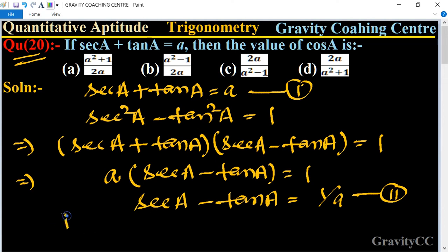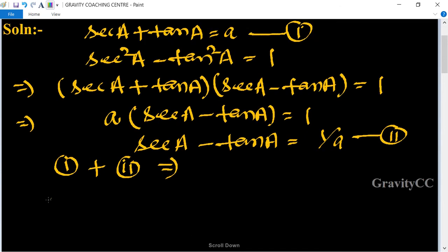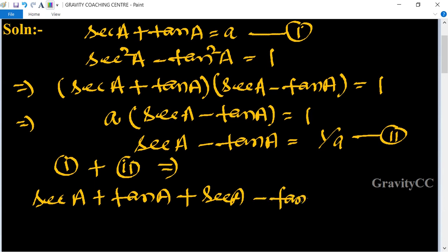Adding the first and second equations: sec A + tan A + sec A - tan A = a + 1/a. This gives 2 sec A = a + 1/a.